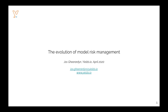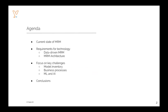The presentation, which will last approximately one hour, has three main topics. First, I'll start with describing the current state of model risk management. Then I would like to draw some conclusions by indicating what are the key requirements for technology that crystallize out of those challenges we see today. I would like to focus on key topics we come across very often, related to the model inventory and how to optimize and manage complicated business processes. I'll also say a few words about how to incorporate machine learning and AI in model risk management practices.